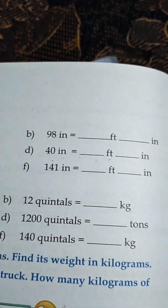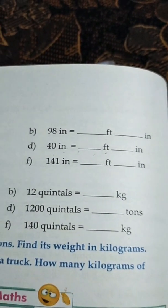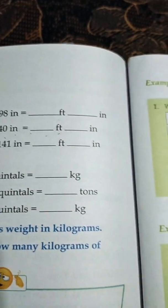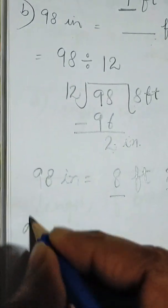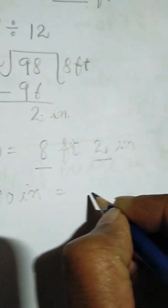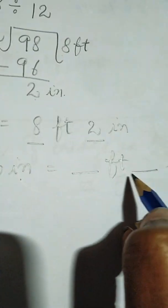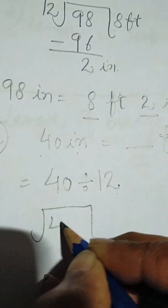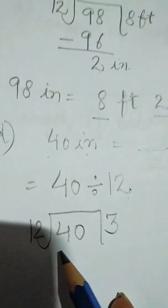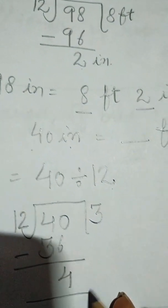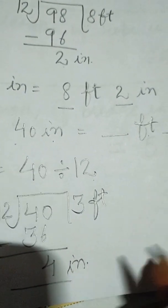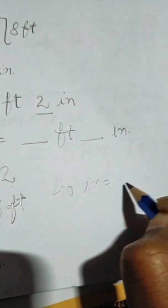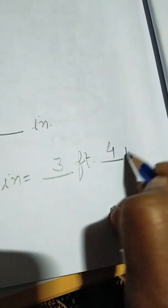Part (d): 40 inches is equal to how many feet and inches? Similar to part (b), we divide 40 by 12. 12 times 3 is 36, with remainder 4. So 3 is the feet and 4 is the remainder in inches. Therefore, 40 inches is equal to 3 feet and 4 inches.